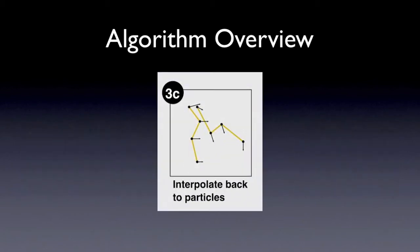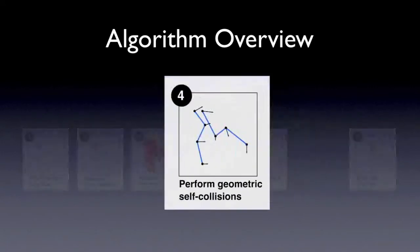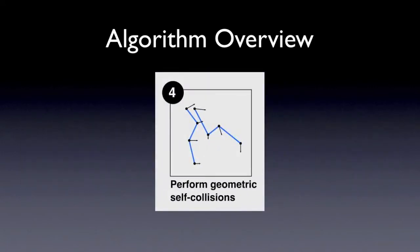The resulting divergence-free velocities are returned to the particles using flip. While the bulk collision behavior is correct, local interpenetrations may have occurred, so we now perform geometric self-collisions creating high fidelity detail.